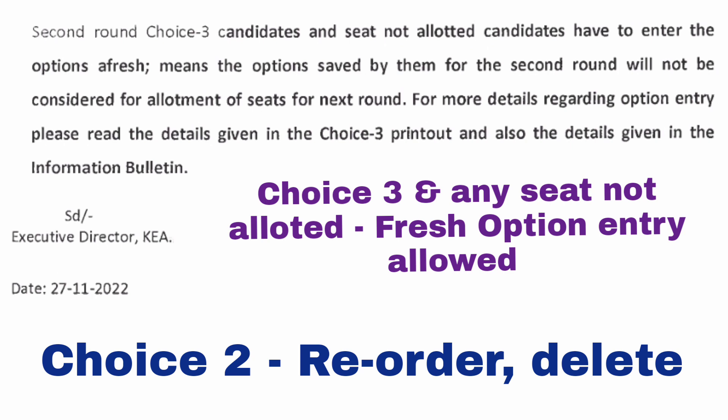This is the last year's guideline for the second extended round. It says that students who are going to do choice three after the second round seat allotment — whose results will be out — that means they are rejecting the college they get in the second round. The second situation is if students are not getting any seat today, and earlier also they have not got any seat.